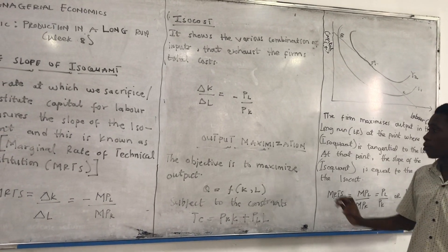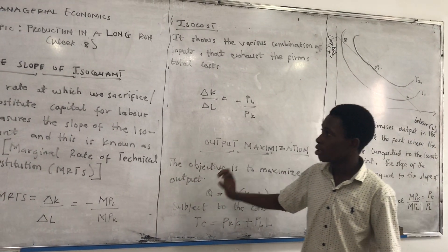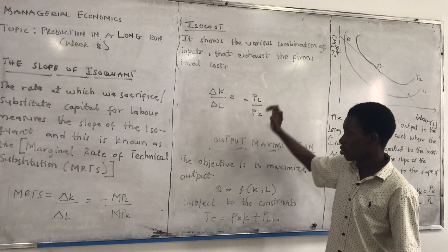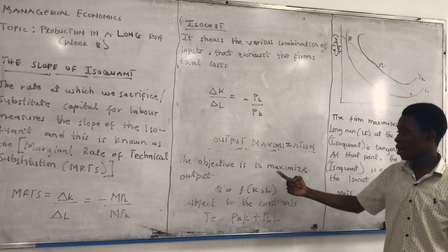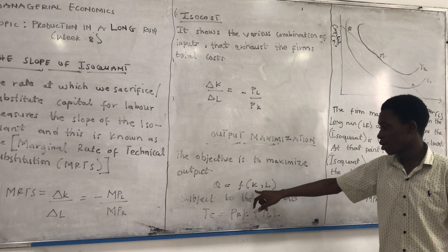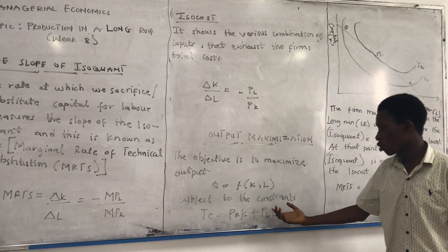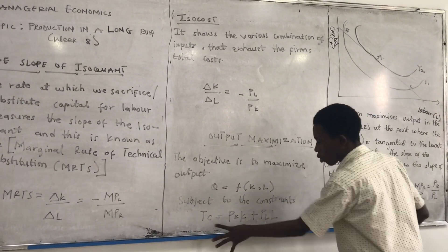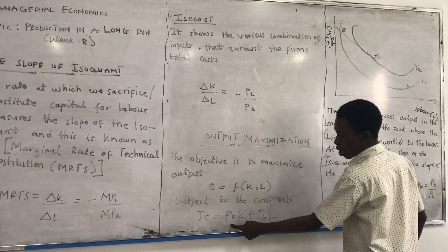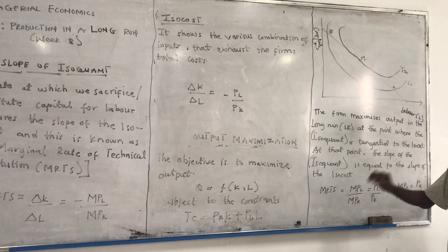Under the long run, we also have output maximization, whereby we join the isoquants and the isocost. The objective is to maximize output, subject to the constraint of total cost. The total cost function is: TC = (price of capital × K) + (price of labor × L).